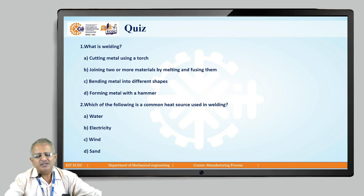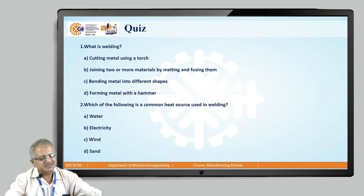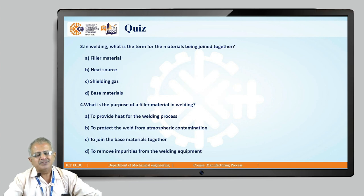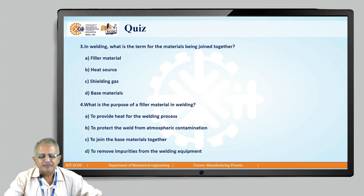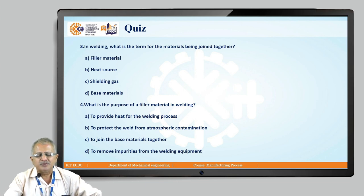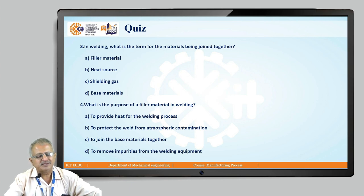The second quiz question is: Which of the following is a common heat source used in welding? The four options are: water, electricity, wind source, and sand. Obviously, electricity is the source used in welding processes. The third quiz question is: In welding, what is the term for the materials being joined together? Options are: filler material, heat source, shielding gas, and base material. Obviously, the answer is D — base material.